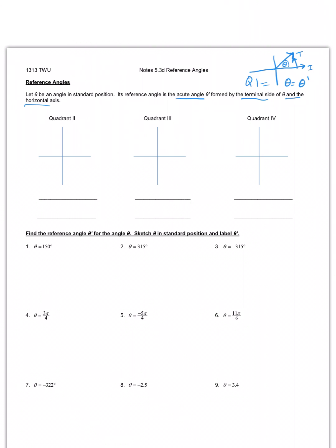Now I'm going to show you how to handle it with quadrants two, three, and four. In quadrant two, you have an angle that starts here and ends here — this is angle theta. We create our right triangle, and theta prime is inside that triangle. It has to be acute and formed with the x-axis. We always use theta prime when we find our six trig functions.